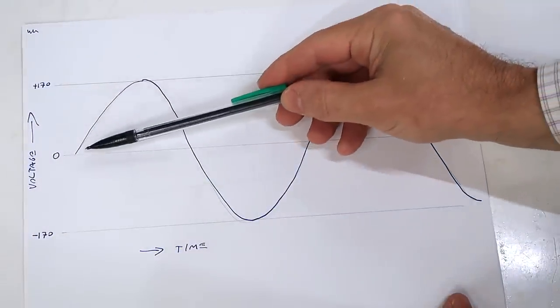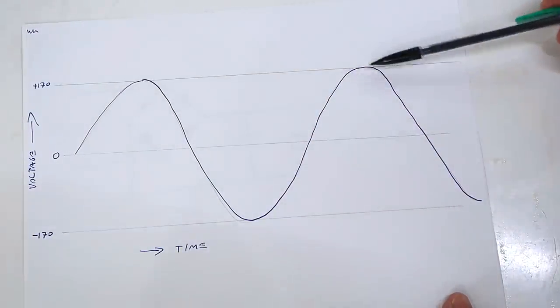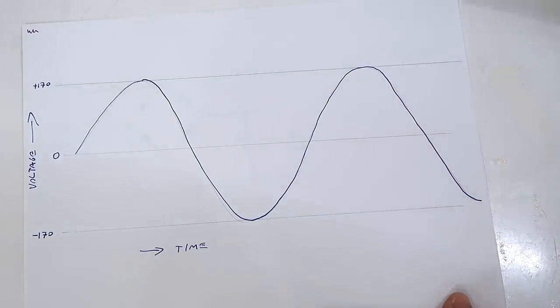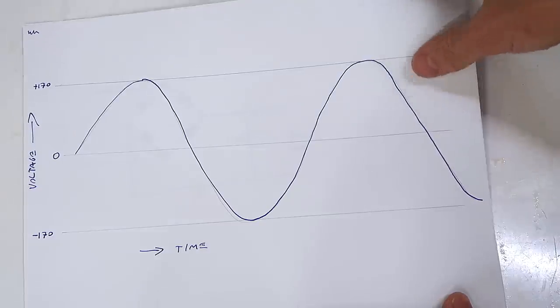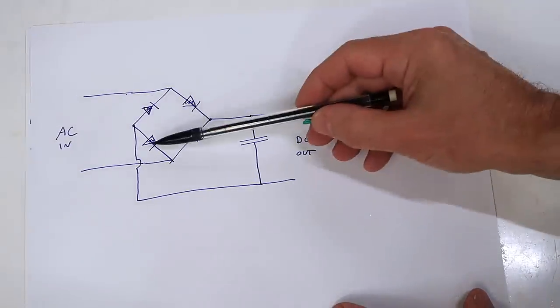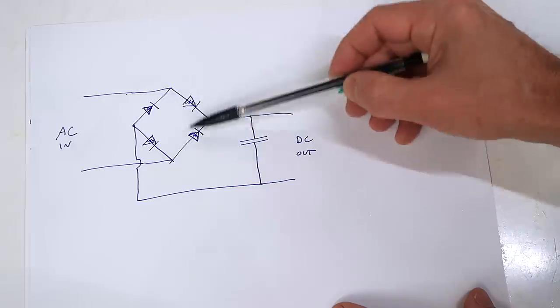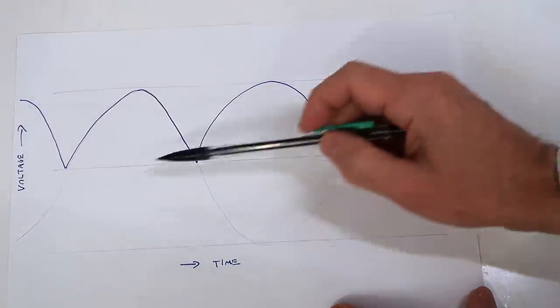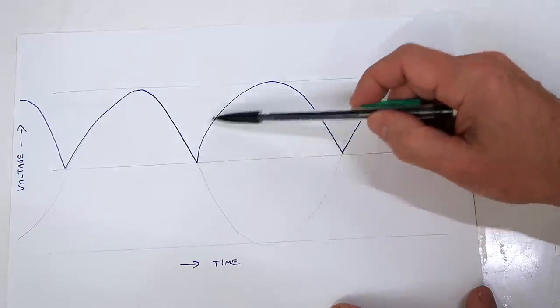The waveform from the power company is essentially a 60 hertz sine wave, 60 times per second, positive, negative, positive, negative. But the mini split, using brushless DC motors, needs DC. So we use something called a rectifier using four diodes that only pass current in one direction to essentially flip the bottom side of this waveform to the top.